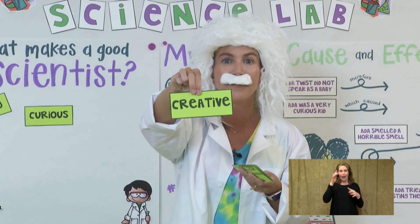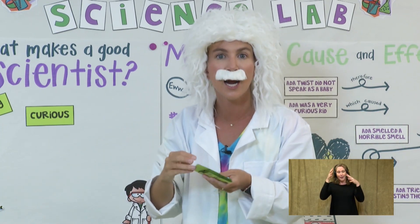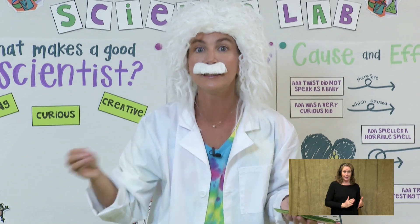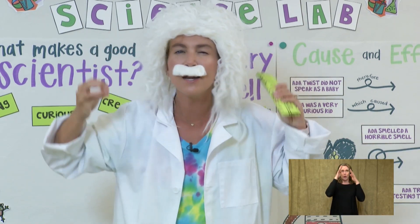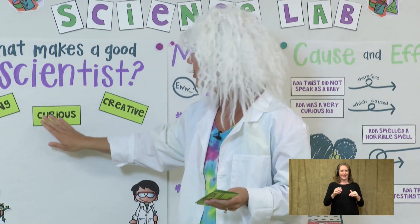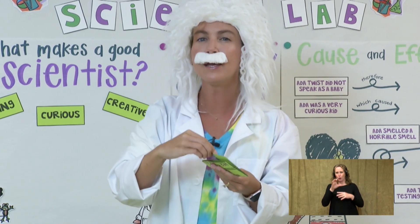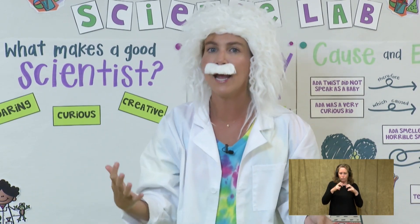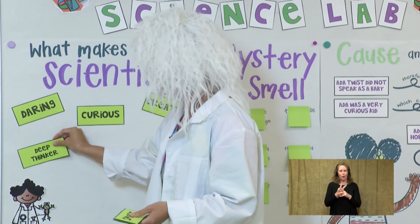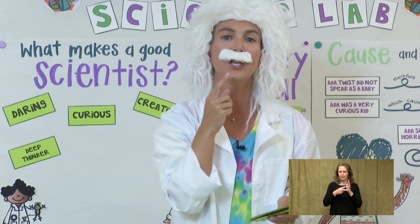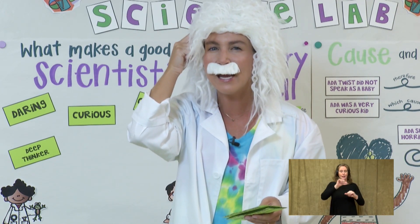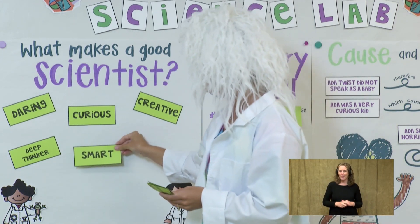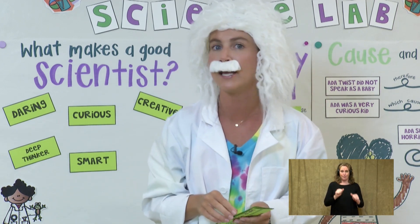Scientists are very curious about the world around them. What about creative? Scientists have to be creative in order to try new things — like when you're painting or drawing a picture, you have to get that creative brain going. So: daring, curious, creative. What about being a deep thinker? Scientists are always thinking about their experiments — what happened and why — always trying to figure out more. And scientists have to be very smart in order to experiment and learn all that they can.